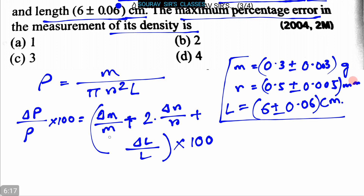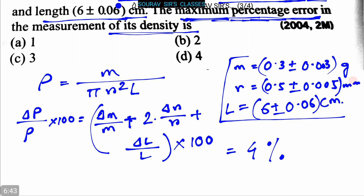We write: (Δρ/ρ) × 100 = (Δm/m) × 100 + 2 × (Δr/r) × 100 + (Δl/l) × 100. Putting in the values of m, r, and l, we get the answer as 4 percent. So the maximum percentage error in the measurement of its density is 4 percent, and option D is the correct answer.